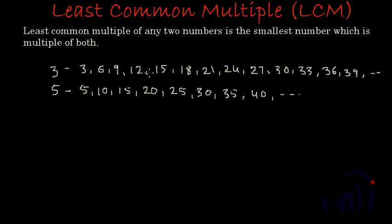Next, we want to search the numbers which are common in their multiples. So here is the list of all the multiples of three and this is the list of all the multiples of five. As you can see, in this list we have 15 and in this list also we have 15. Similarly, here we have 30 and here also we have 30.